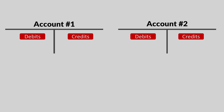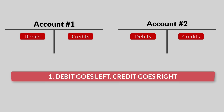In accounting, instead of piggy banks, we use T accounts. Every account has its own T. The left side of the T is where the debits go, and credits go on the right side. That's the first main rule you have to remember. Debit and credit do not mean plus or minus — debit literally just means left side of a T account, and credit means right side. Debit means left, credit means right. That's rule number one.